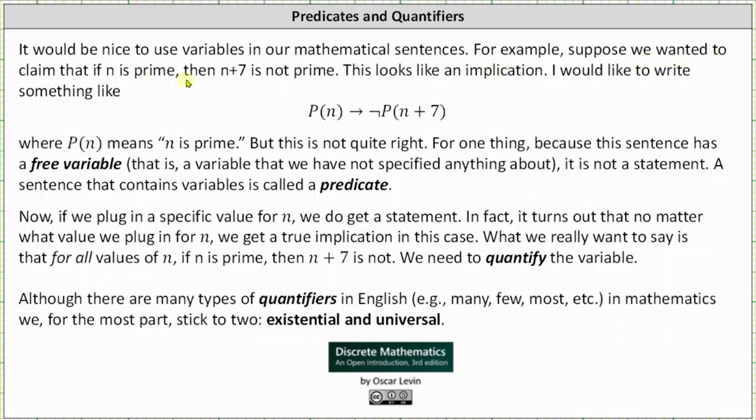For example, suppose we wanted to claim that if n is prime, then n plus 7 is not prime. This looks like an implication. We could write something like if P(n), then not P(n + 7), where P(n) means n is prime.